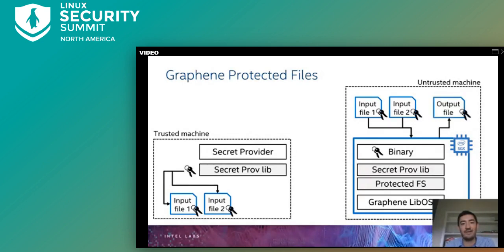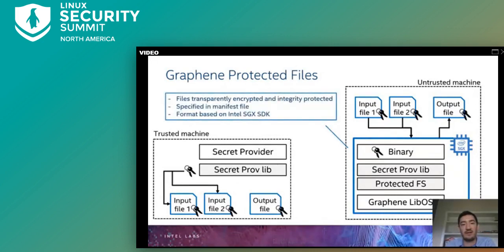After the enclave finishes its secure computation, the application produces an output file that is also transparently encrypted by protectedFS with the same encryption key. The output file may then be moved to the remote user, where it will be decrypted. Graphene implements protected files as transparently encrypted and integrity-protected files; specific files or whole directories to be treated as protected must be specified in the manifest. The encryption format is borrowed from a similar feature of the Intel SGX SDK.